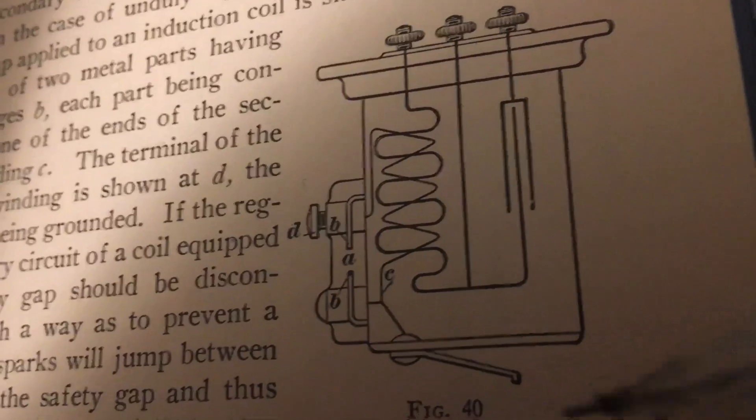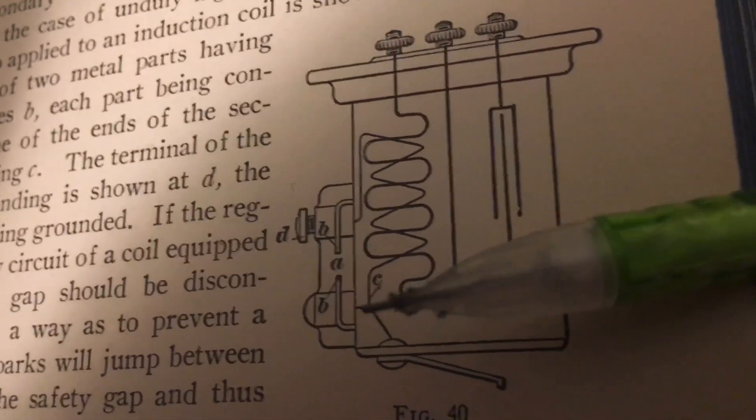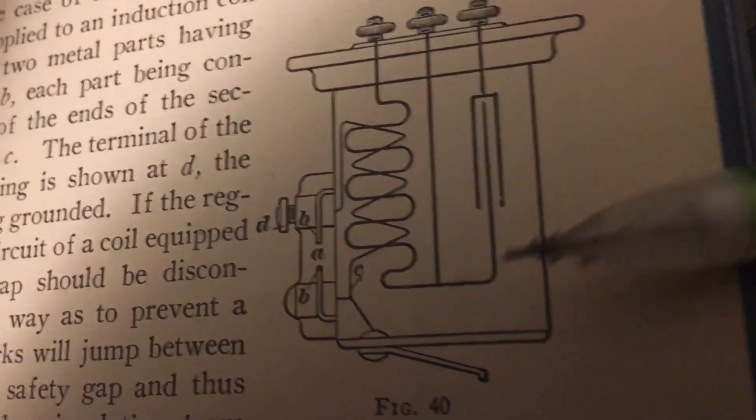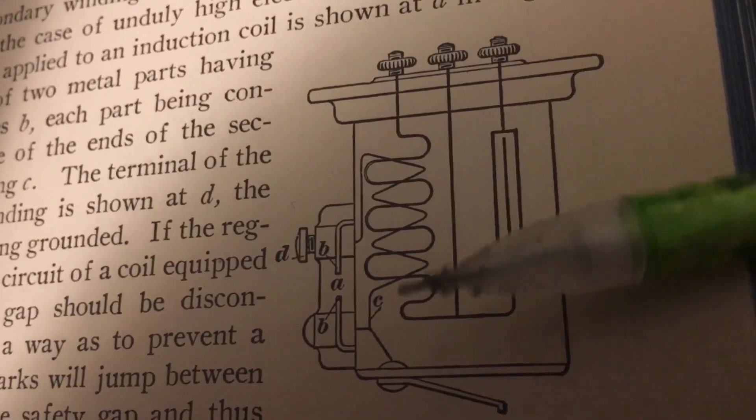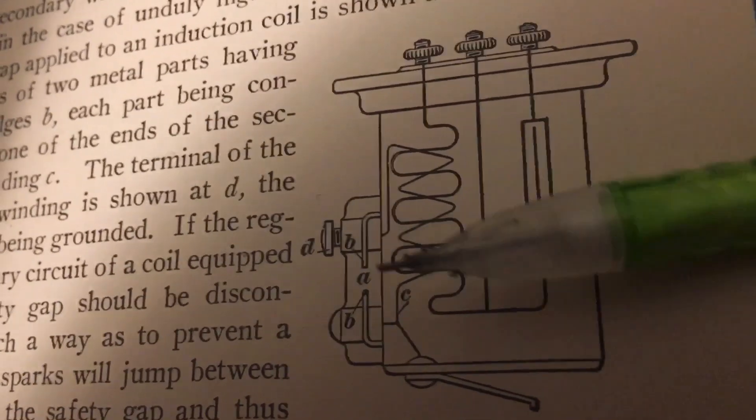Something fails in the secondary end of things which prevents the spark from actually happening. Instead of roasting the coil here and destroying the insulation on the secondary and destroying the coil, the spark would actually happen across the safety gap here.